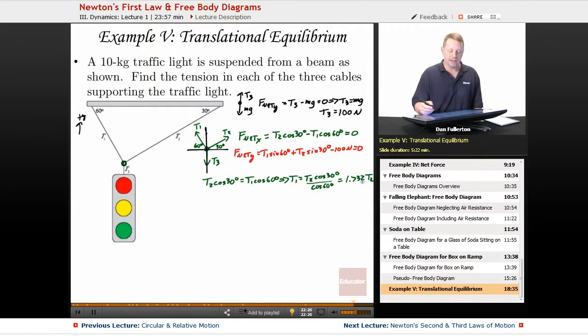We can take that and plug that into our red equation, the net force for the y direction, by writing that T1 sin 60 degrees plus T2 sin 30 degrees equals 100 newtons.